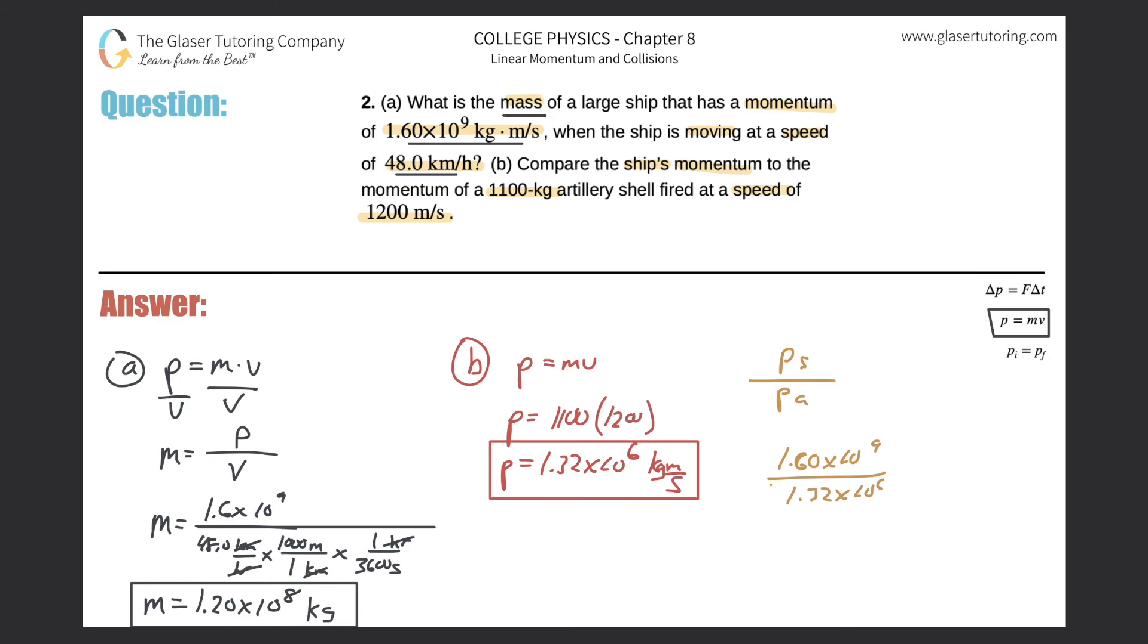And when we do that math, 1.6 times 10 to the 9 divided by that answer, we get a value of about, so this works out to be about 1,210 to 1, meaning that the momentum of the ship is 1,210 times greater than the momentum of the artillery shell.